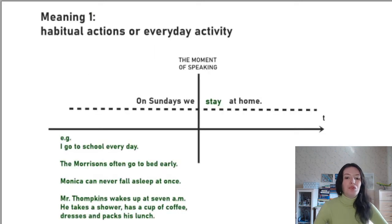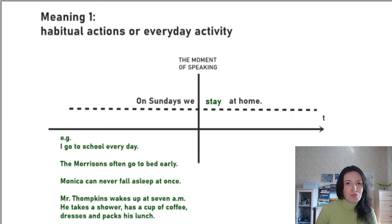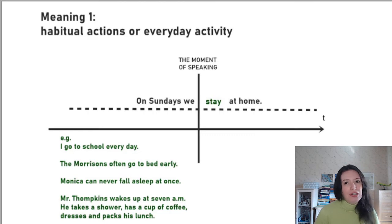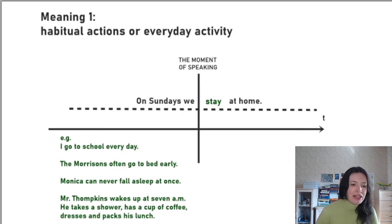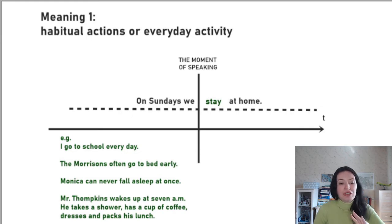Then we move on to meanings. The present indefinite generally has five meanings. Two of them are paradigmatic — that means we understand them with very little context, the traditional, regular, standard ones where we don't need any special conditions. The other three meanings are syntagmatic, meaning we need special conditions and some context to understand and use them.